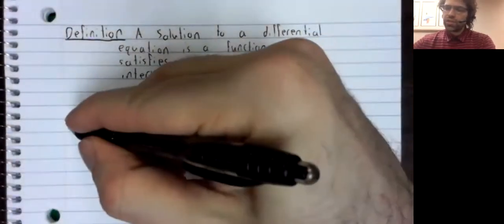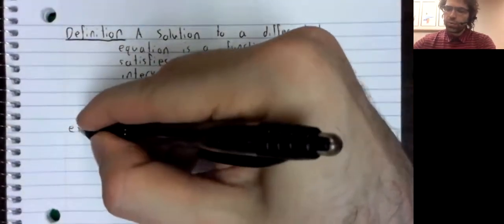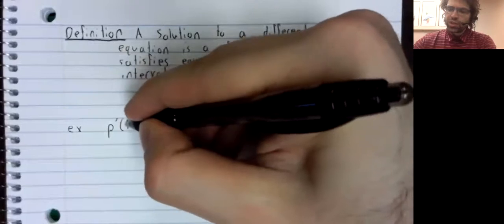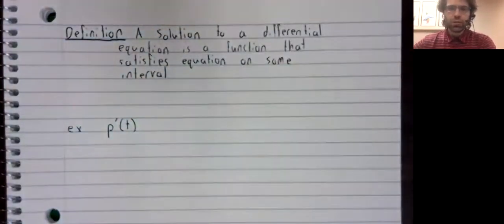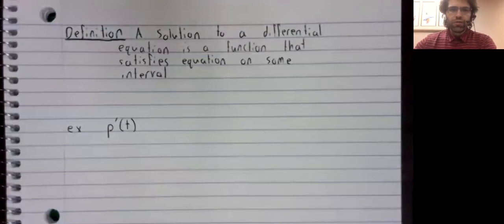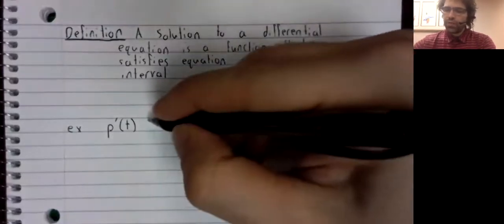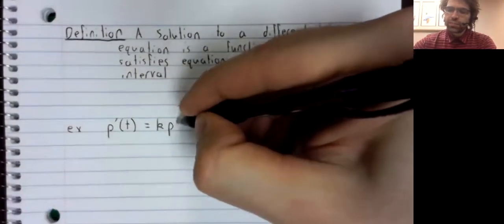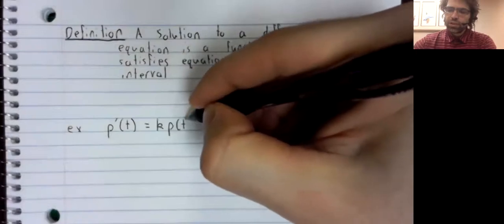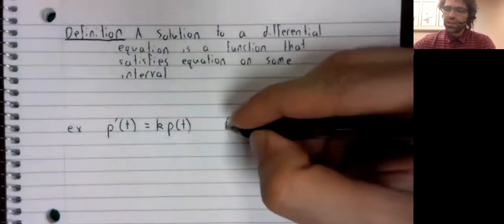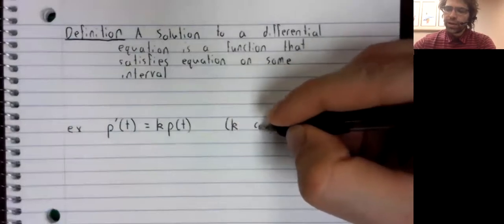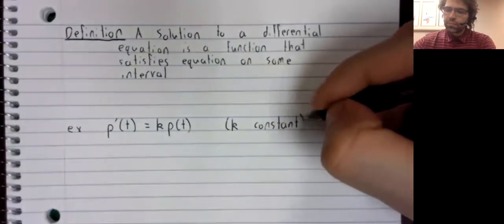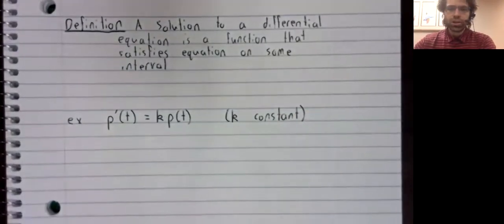Let's look at an example. We previously introduced a differential equation of the form p'(t) = k·p(t), where k is some constant.